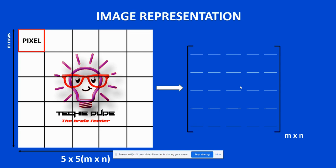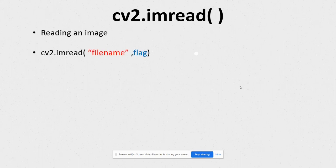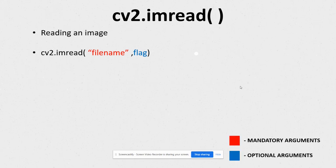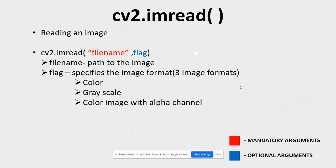Now let's jump into the cv2.imread function. As the name says, this function is used for reading an image from your computer. It takes two arguments: the file name and a flag. Red corresponds to mandatory arguments and blue to optional arguments. The flag specifies the image format — color, grayscale, or color with alpha channel. The default format is color.